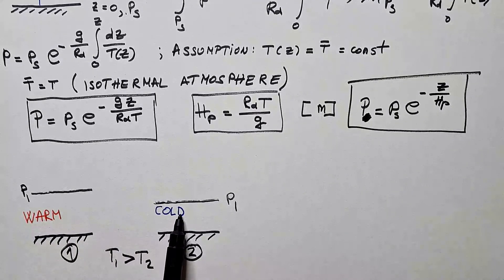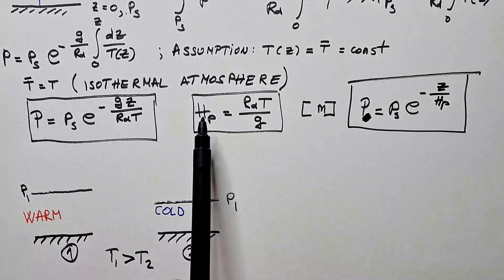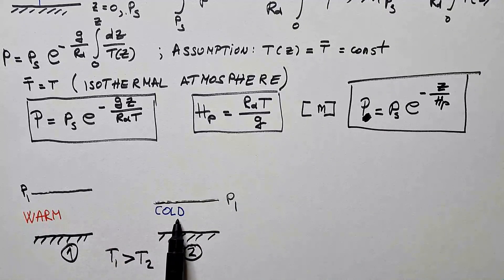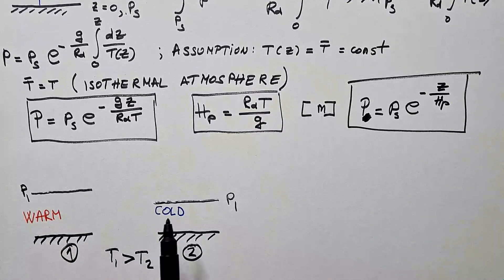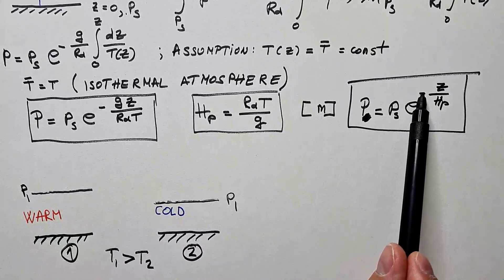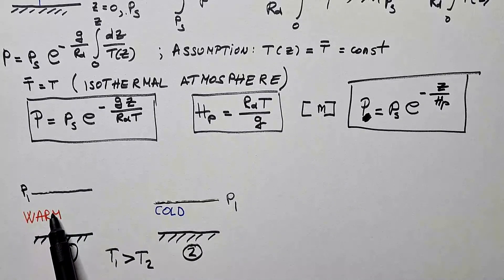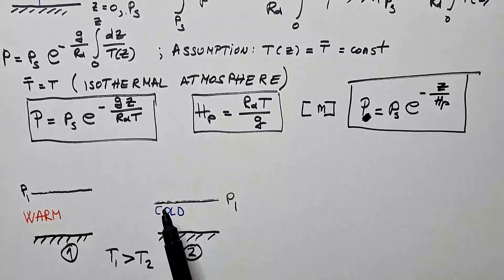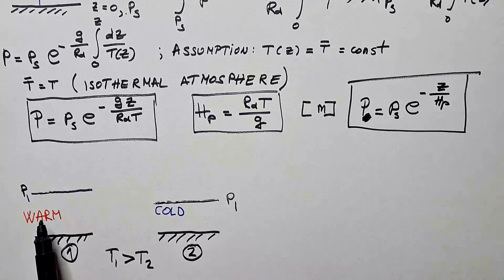Because this is warm air, this is cold air. Temperature here is higher than temperature here, which means hp is higher here than here. z over hp is therefore larger here than here. But e to the negative z over hp is therefore larger in warm air than it is in cold air. Which means that pressure will decrease faster in cold air than it is decreasing in warm air with height, of course.